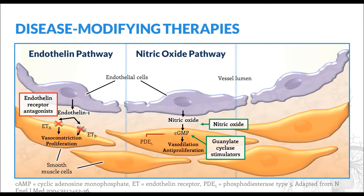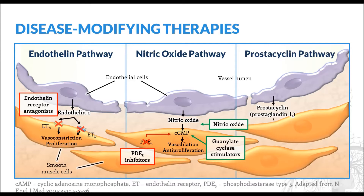Finally, cyclic GMP is broken down by phosphodiesterase type 5, so PDE5 inhibitors, such as sildenafil, can be used to prevent cyclic GMP degradation. Lastly, the prostacyclin pathway involves the production of prostacyclin, another endogenous vasodilator and antiproliferative that exerts its activity via enhanced cyclic AMP concentrations. Prostanoids, such as epoprostenol or treprostinil, may be used to augment this pathway in patients with PAH.